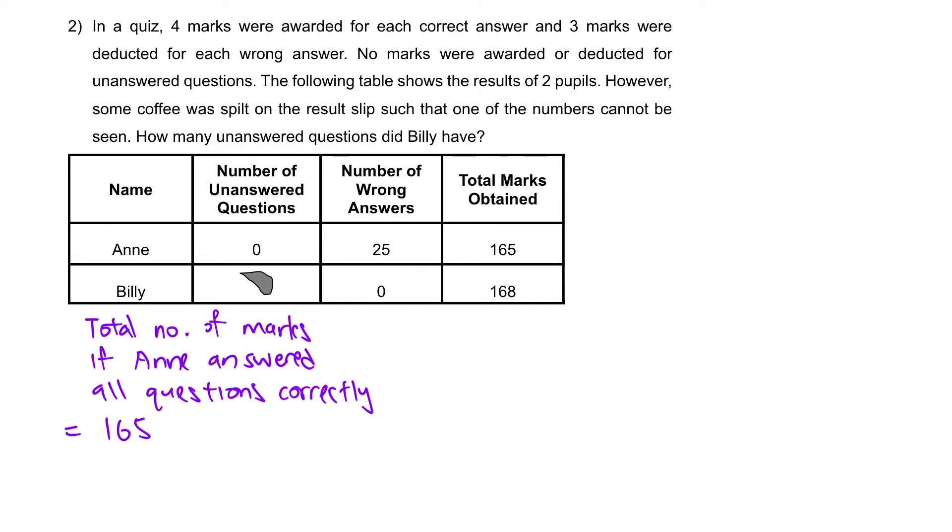If she didn't get these 25 questions wrong, we would need to give her back the 3 marks that were deducted. So we are going to add back the 25 times 3, which is 75 marks. Not to forget, not only she wouldn't lose these 3 marks per question, and if she happens to get them correct, she would gain another 4 marks per question. So essentially you are gaining 7 more marks per question.